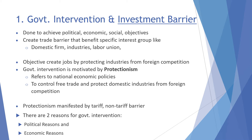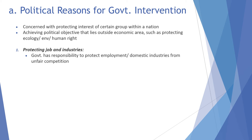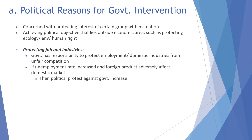There are two reasons for government intervention: political reasons and economic reasons. Political reasons are concerned with protecting the interests of certain groups within a country, achieving political objectives outside the economic area — such as protecting ecology, environment, and human rights — and protecting jobs and industry. The government has a responsibility to protect employment and domestic industry from unfair competition. If the unemployment rate increases and foreign products adversely affect the domestic market, political protest against the government increases.